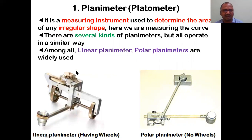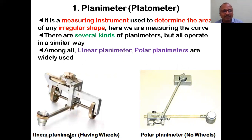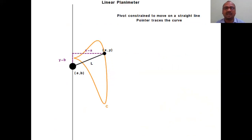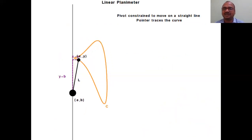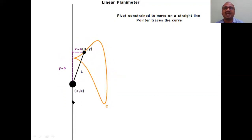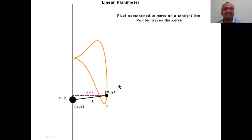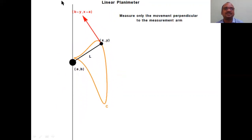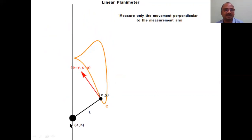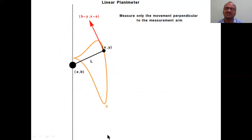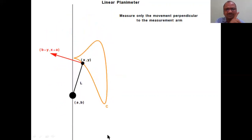There are several kinds of planimeters - nearly eight to ten types - but all operate in a similar way. The procedure detail is not required. Among all, linear planimeters and polar planimeters are widely used. Here I will show how it works: the linear planimeter measures the shape using movable joints and wheels. This diagram is for your idea only - you need not draw it in the examination.